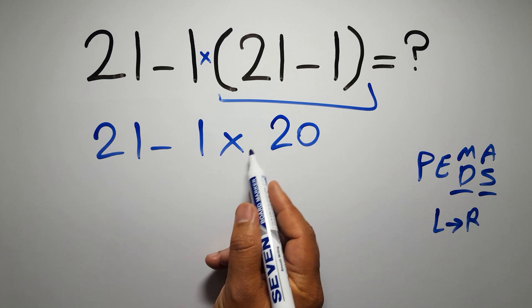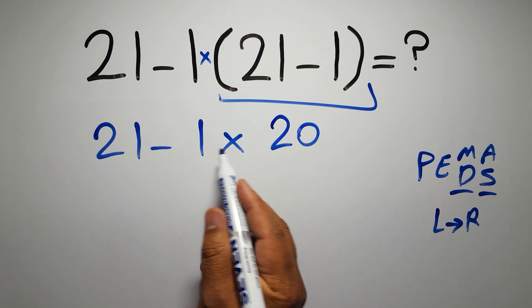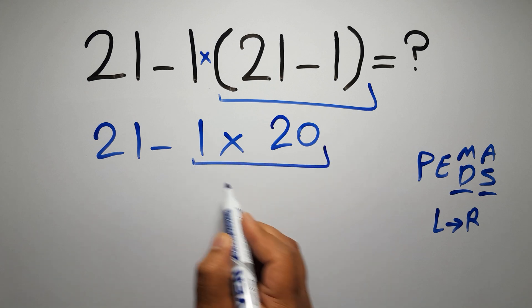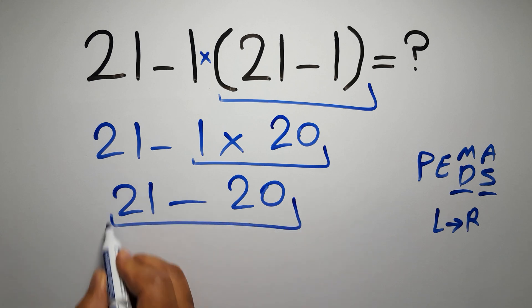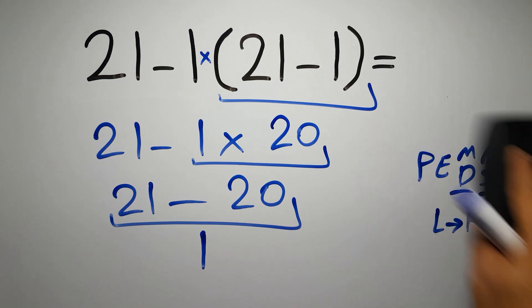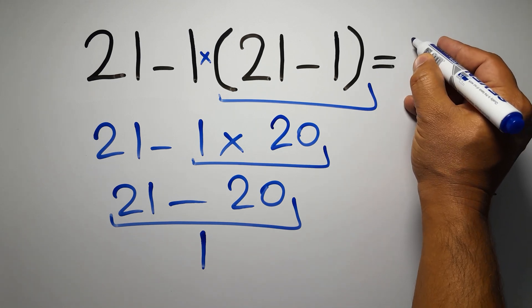So here first we have to do this multiplication: 1 times 20 gives us 20. So 21 minus 20, which gives us just 1. This is our final answer to this problem. The correct answer is 1.